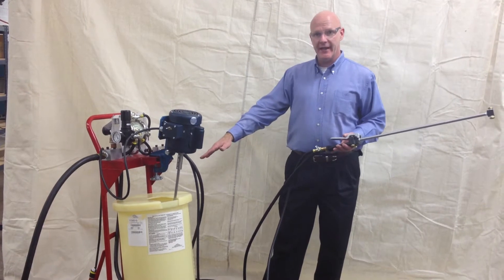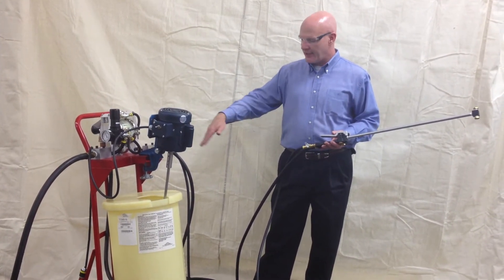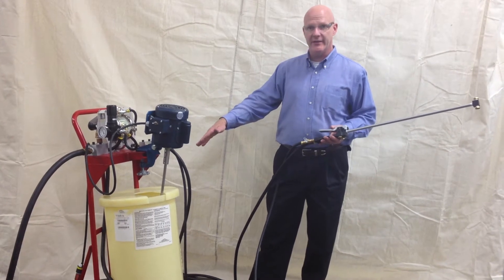On the cart, we have a 15-gallon tank. It's made from cross-linked polyethylene. It's rotationally molded, so it's very resistant to leaks.